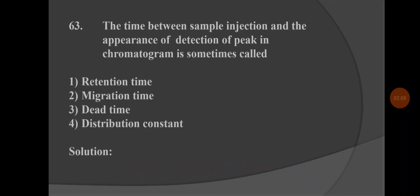Next question: The time between sample injection and the appearance or detection of a peak in the chromatogram is sometimes called — option 1: retention time, option 2: migration time, option 3: dead time, option 4: distribution constant. The correct answer is option 3: dead time.